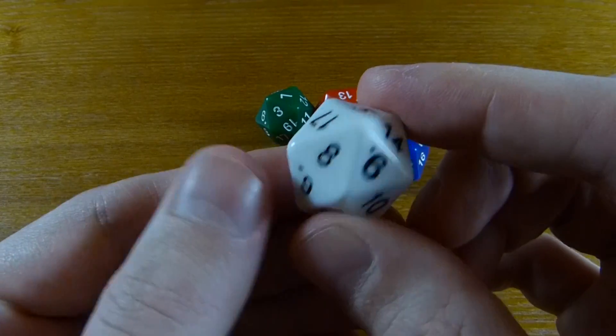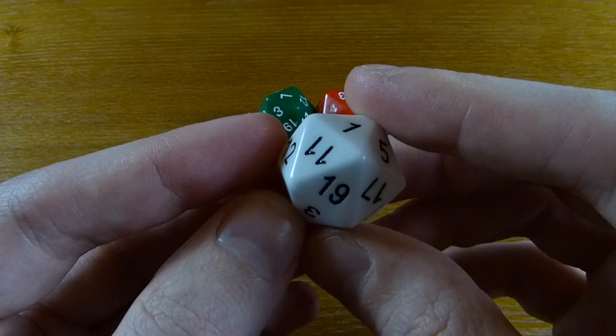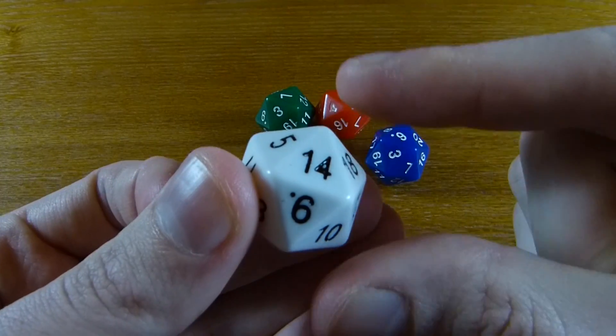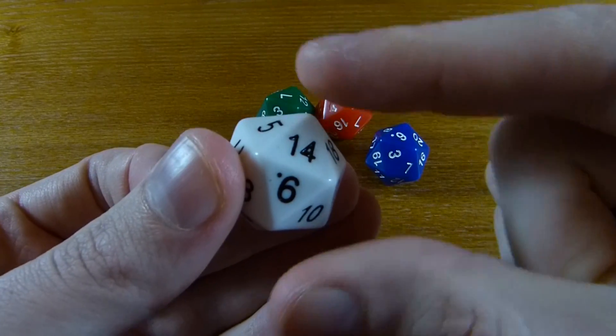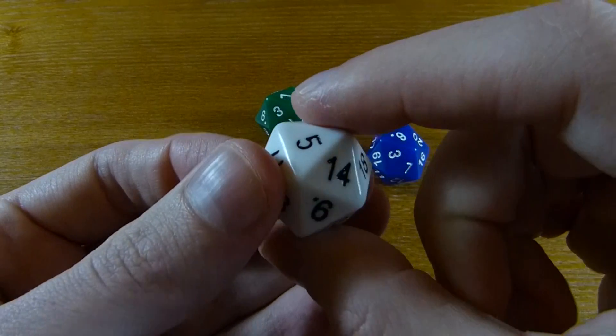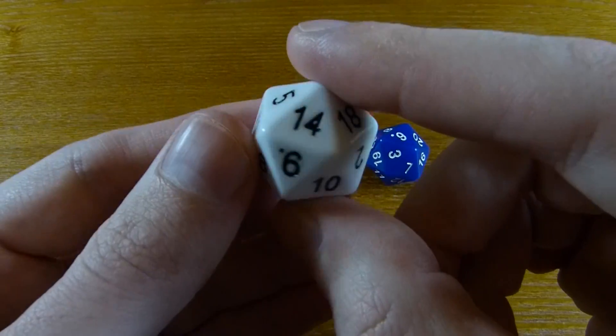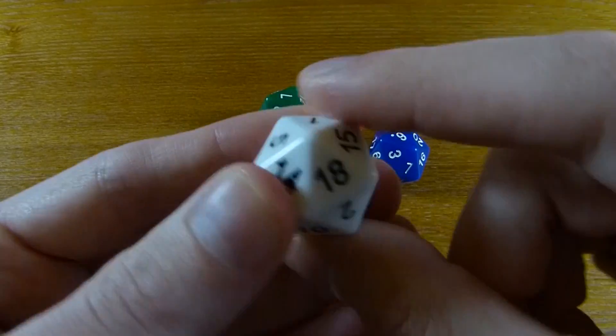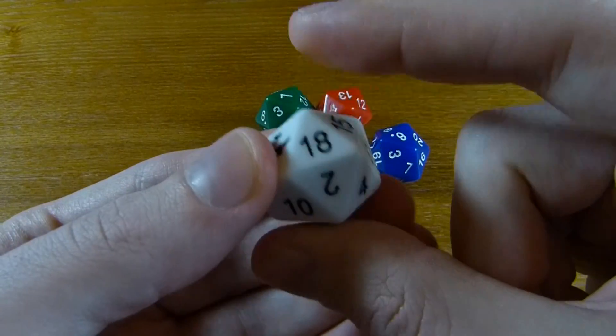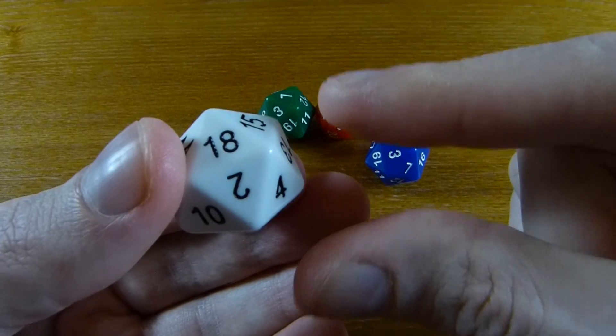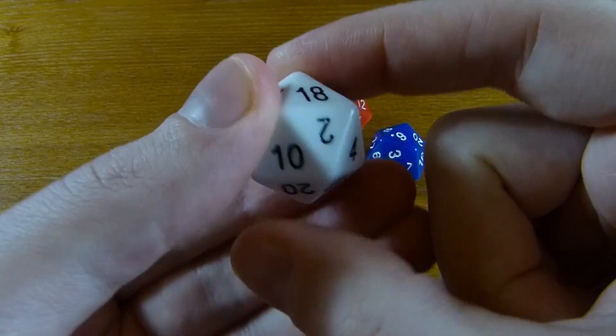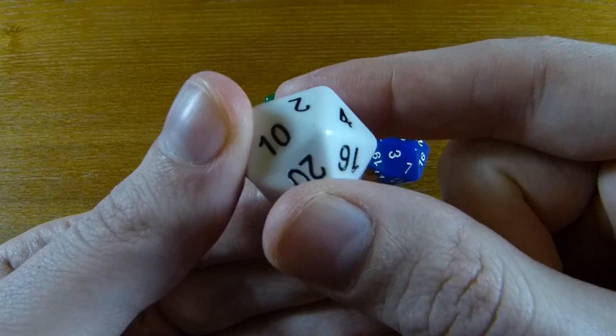One common way in which a die can be unfair is it can be squished in one direction, so it's a little bit flattened out. It's a bit more like a coin than like a regular polyhedron. If it's squished out in the 1-20 direction, then it's more likely that one of these two numbers is going to come up than any other number.